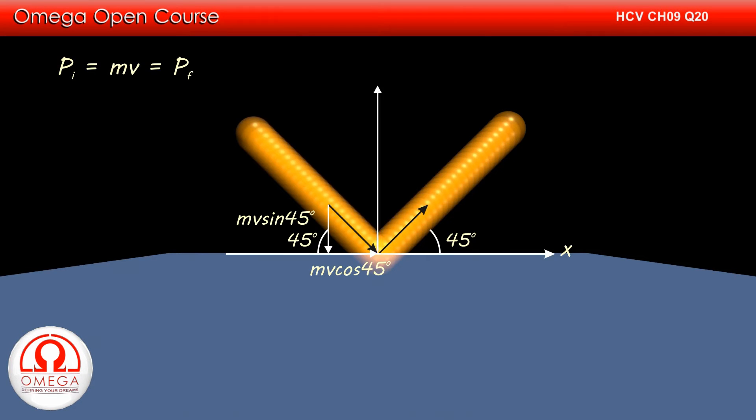The vertical component of the initial momentum is MV sin 45 degrees in vertically downward direction. If we take the horizontal direction to be x-axis and vertical direction to be y-axis, then the initial momentum vector of the ball can be written as MV cos 45 degrees i cap minus MV sin 45 degrees j cap.